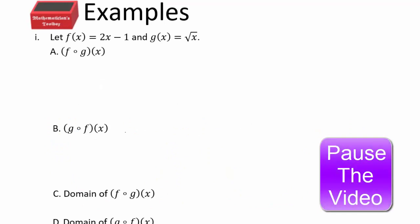Let's do some examples. Given f of x equals 2x minus 1 and g of x equals square root of x, figure out f composite g of x, g composite f of x, the domain for f composite g, and the domain for g composite f. Pause the video — you can draw a diagram or algebraically compute it.